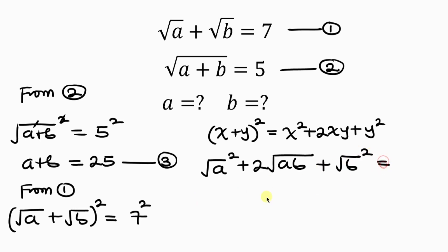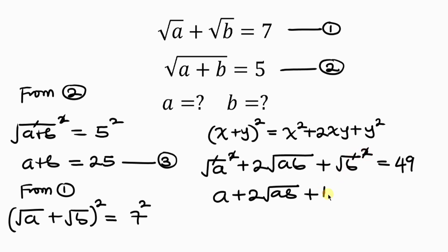This is equal to the right-hand side: 7 squared is 49. Notice that the square cancels the square root, so we have A plus 2 times the square root of AB plus B equal to 49. Notice that we have A plus B here, and from equation 3, A plus B is 25. So we can replace that with 25.